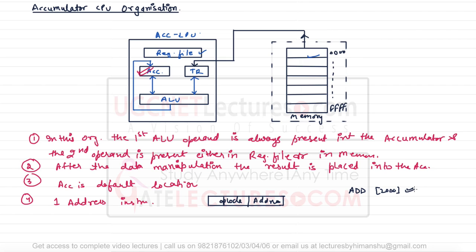For example, if we have 'ADD 2000', this 2000 is giving the memory location. The brackets mean we are talking about the content of that memory location. Inside address 2000 there will be some data — say, the value 5. The second operand will be taken from the accumulator, the operation will be performed, and the result will be stored inside the accumulator.